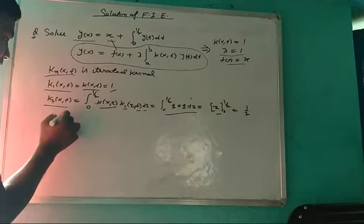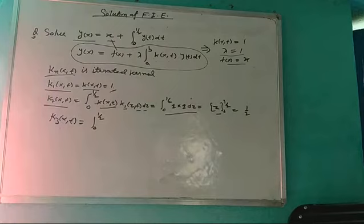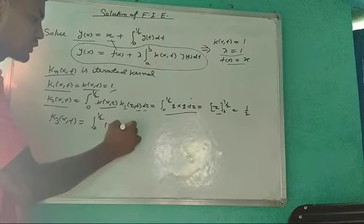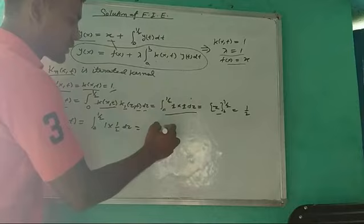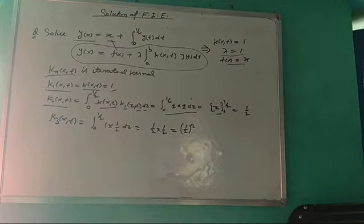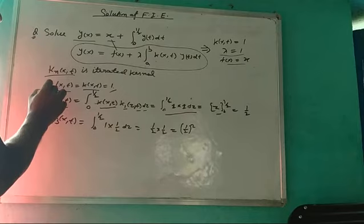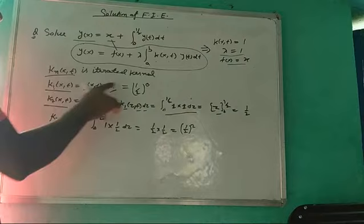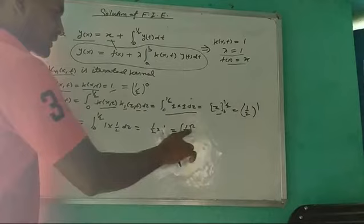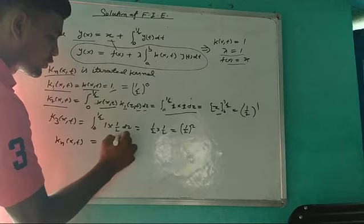Similarly, for k_3(x,t) = integral from 0 to 1/2 of k(x,z) · k_2(z,t) dz = integral of 1 · (1/2) dz. This gives (1/2) · z evaluated from 0 to 1/2, which equals (1/2)^2. By observation: when n=1, the value is (1/2)^0 = 1; when n=2, the power is 1; when n=3, the power is 2. In general, k_n(x,t) = (1/2)^(n−1).